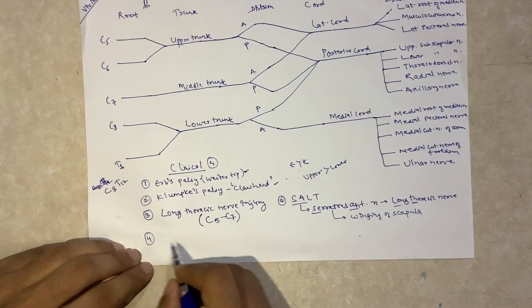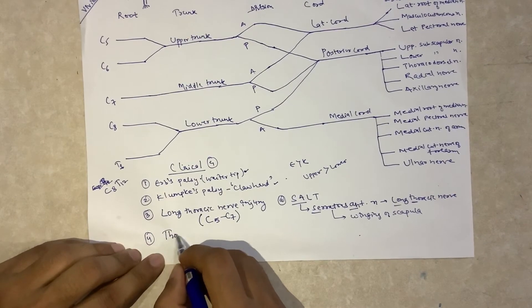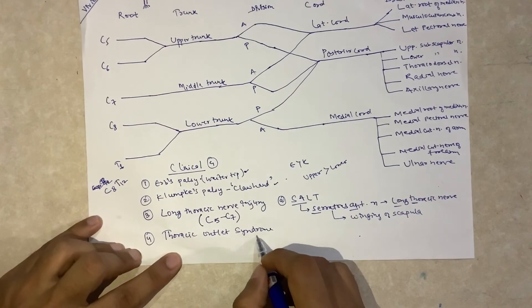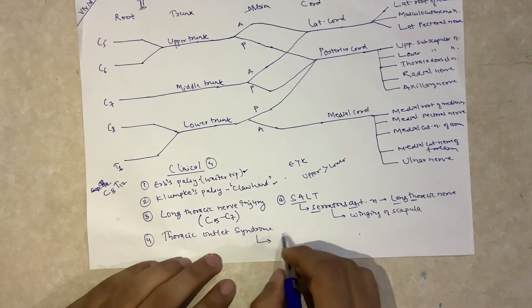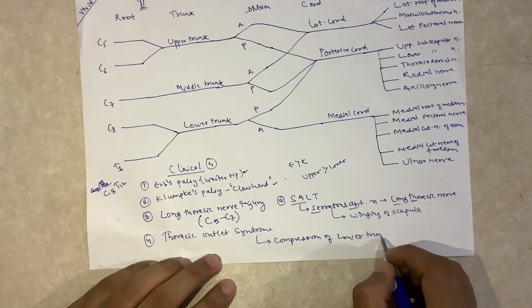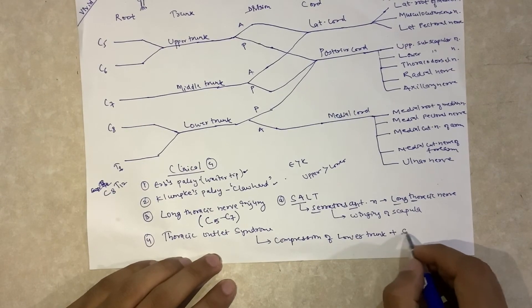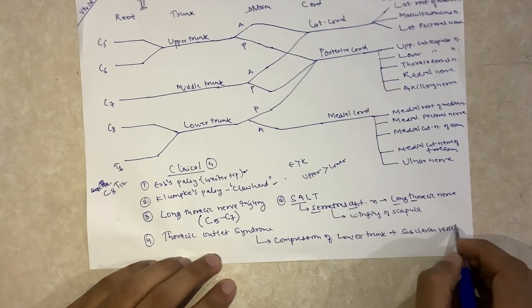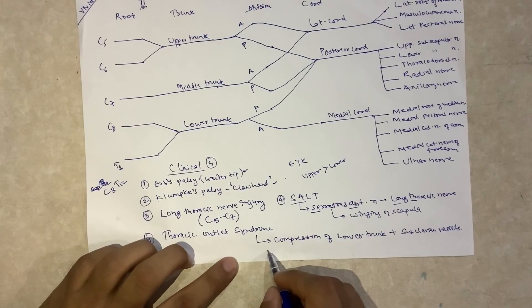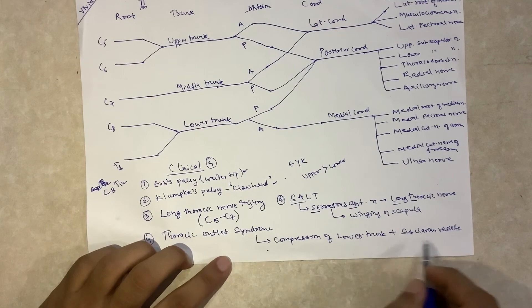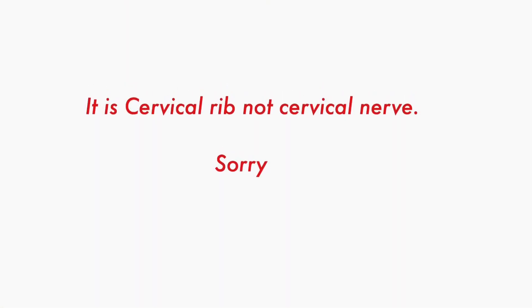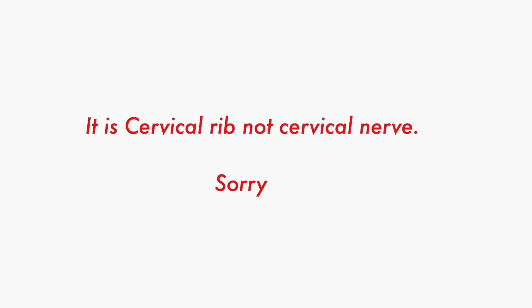The fourth condition is thoracic outlet syndrome. It is due to compression of the lower trunk and subclavian vessels. Conditions that result in this compression include a cervical rib and Pancoast tumor, among others.